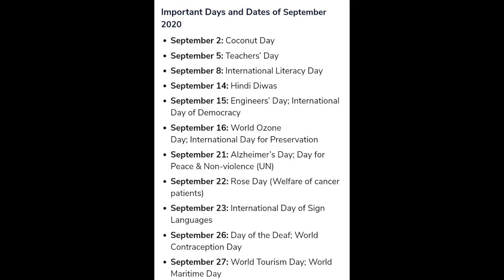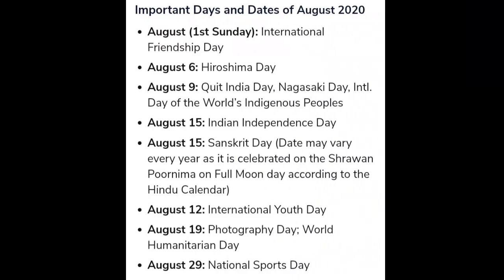September 2nd - Coconut Day. September 5th - Teachers Day. September 8th - International Literacy Day. September 14th - Hindi Divas. September 15th - Engineers Day and International Day of Democracy. September 16th - World Ozone Day and International Day for Preservation. September 21st - Day for Peace and Nonviolence. September 22nd - Rose Day (Welfare of Cancer Patients). September 23rd - International Day of Sign Languages. September 26th - Day of the Deaf and World Contraception Day. September 27th - World Tourism Day and World Maritime Day.